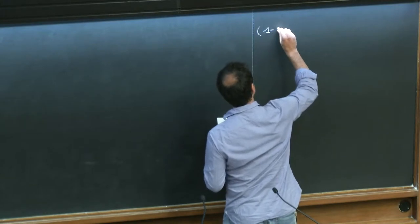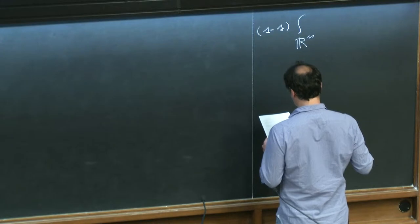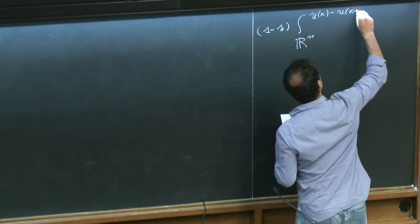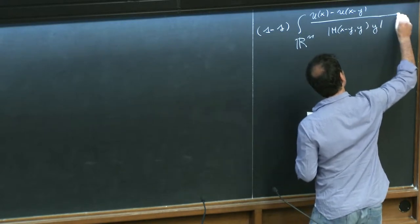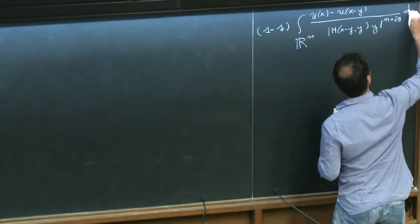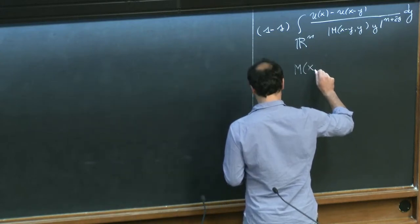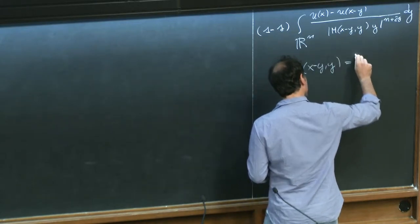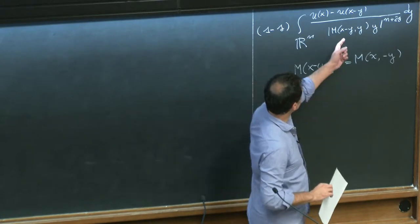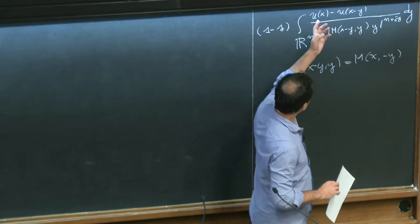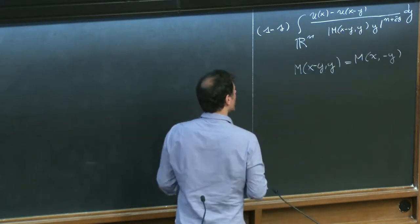The way I was suggesting to recover the non-divergence case is to look at an operator like this: u(x) minus u(x minus y) divided by m(x minus y, y) times |y| to the power n plus 2s, integrated in dy, with the structural assumption that m(x minus y, y) equals m(x minus y, -(x minus y)). Roughly speaking, this says that if you write x minus y equal to z, the operator charges x and z in the same way — x and z are interchangeable in the associated energy.